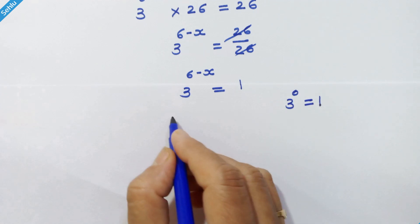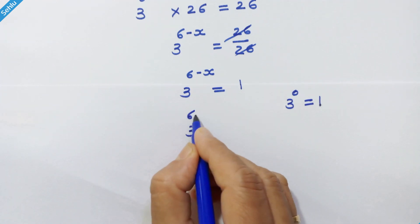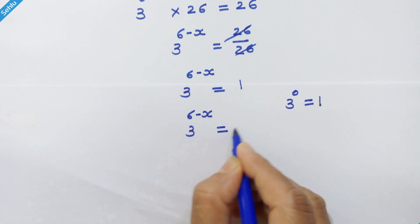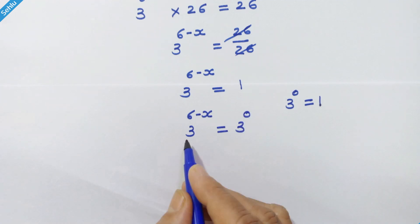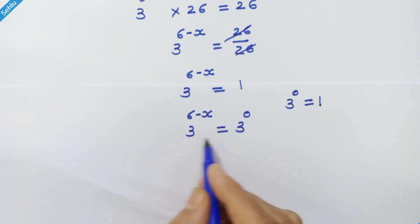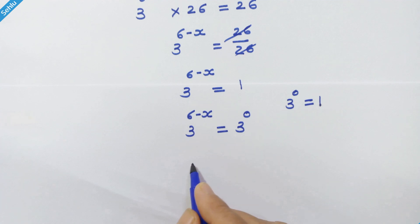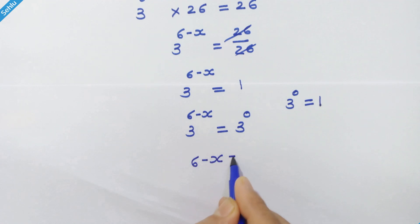So 3 raised to (6 minus x) is equal to 3 raised to 0. Now it's the same base on both sides, so the exponents can be equated. Therefore, 6 minus x is equal to 0.